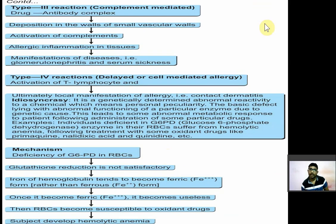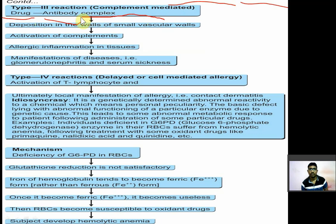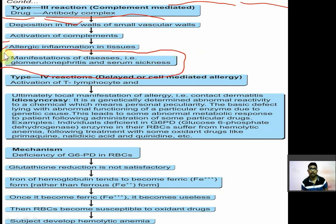Type 3 allergic reaction is known as complement-mediated or complement-fixation allergic reaction. The drug acts as an antigen, antibodies are formed, and an antigen-antibody complex is formed. This complex is deposited in the walls of small blood vessels, activating the complement system, causing allergic inflammation in tissues. Manifestations include glomerulonephritis and serum sickness, which are adverse effects of many drugs and represent Type 3 allergy.